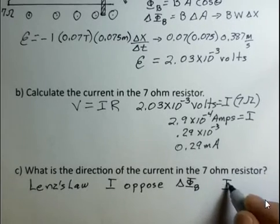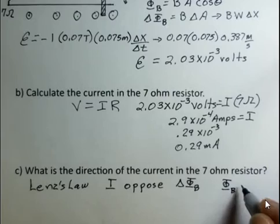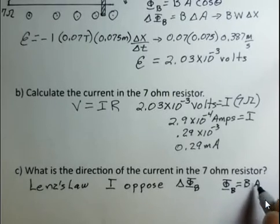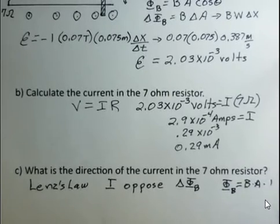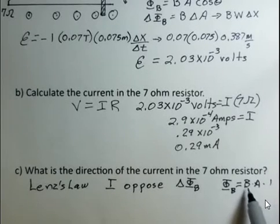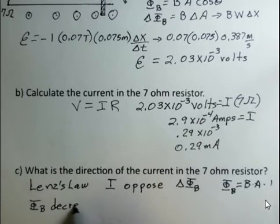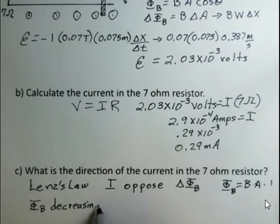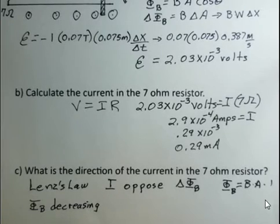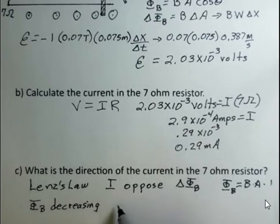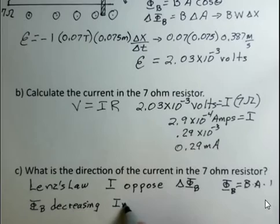So what's happening to the magnetic flux here? The magnetic flux is B times A. The cosine factor is a 1. The magnetic field is constant. It's the area that's getting smaller. So the magnetic flux is decreasing. The induced current has to somehow oppose the decreasing magnetic flux.